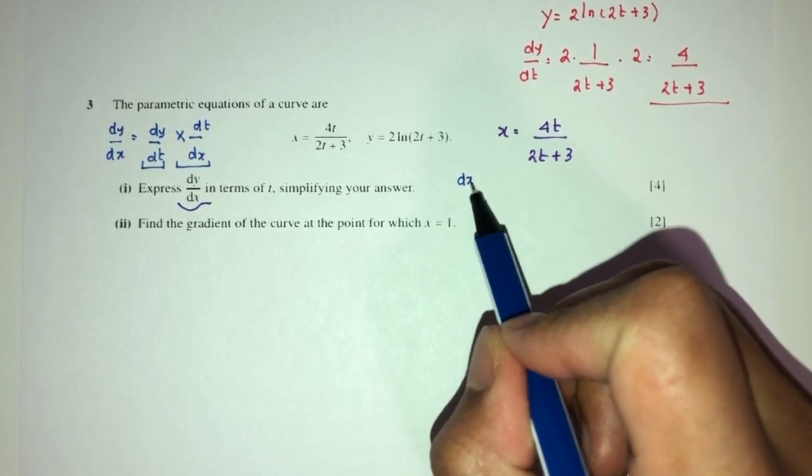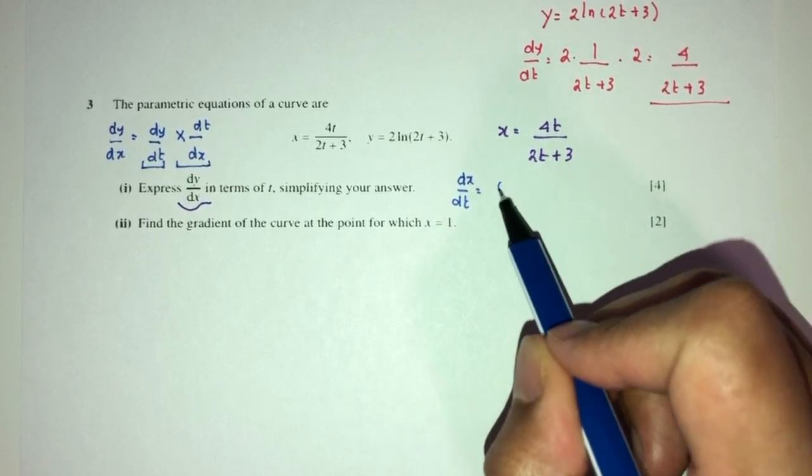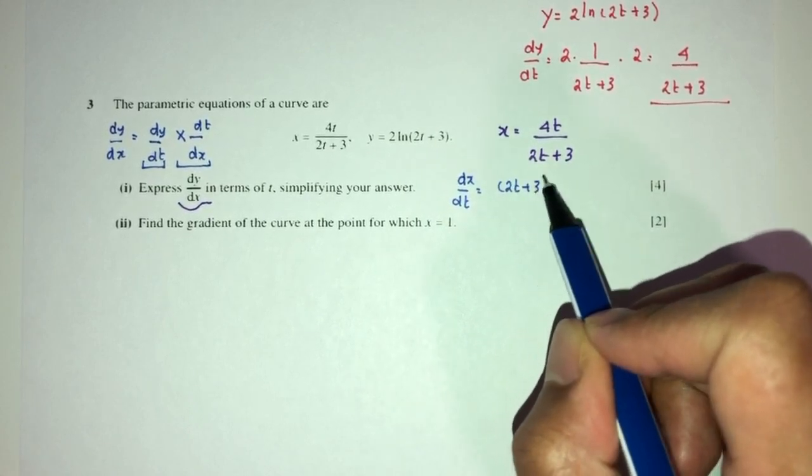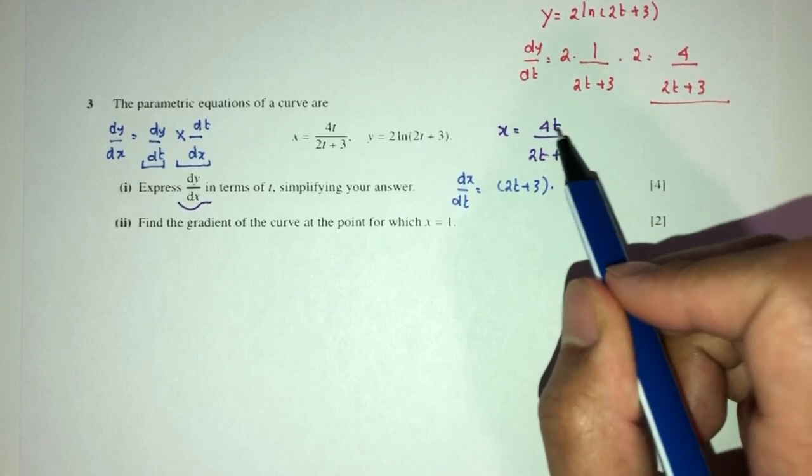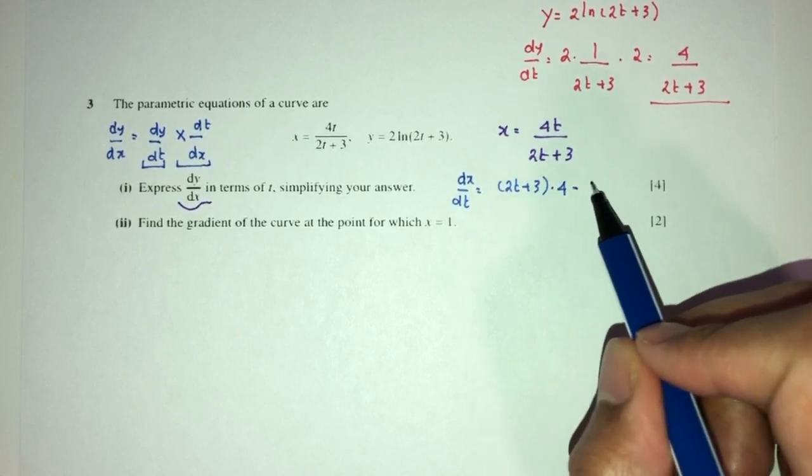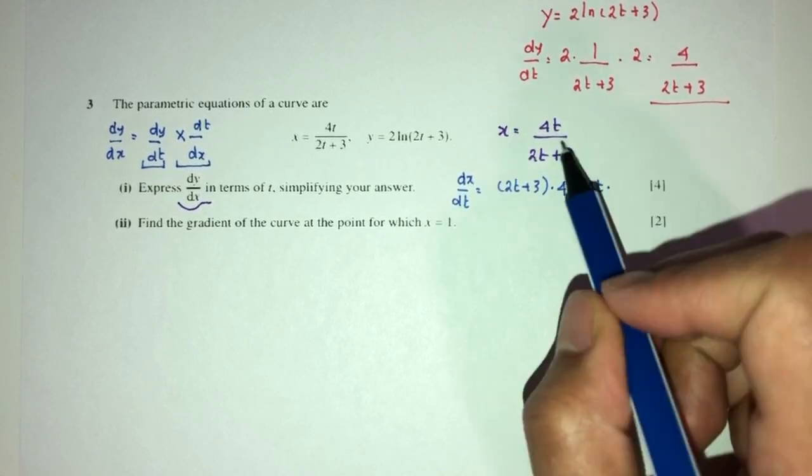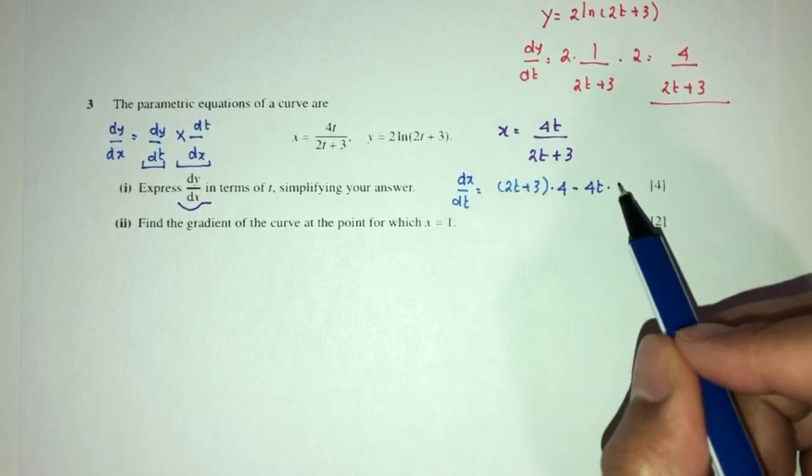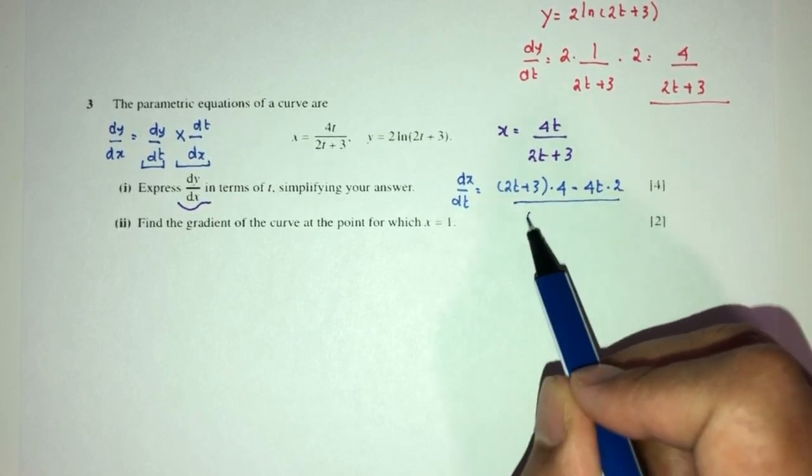So dx/dt will be, we first write the base as it is, then multiply by d/dt of this one, that should be 4, then minus the top as it is, multiply by d/dt of this one, that should be 2, then divide by the base squared.